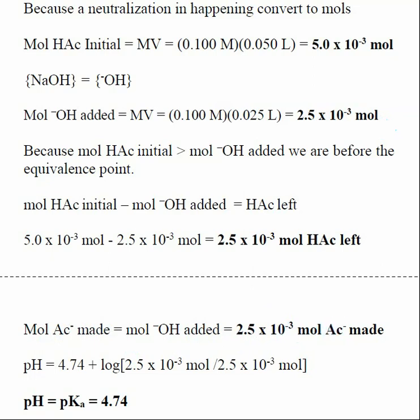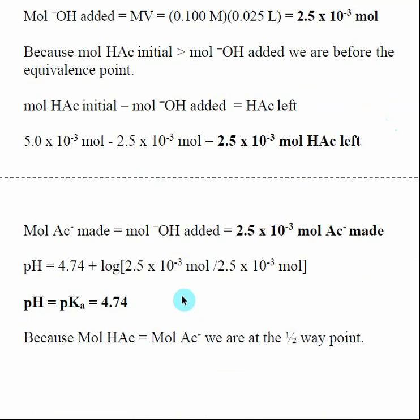Because we are using a weak acid/strong base titration and are before the equivalence point, we use the Henderson-Hasselbalch equation. Plugging in the values — conjugate base divided by acid — those two mole values are equal to each other, so the ratio is 1 and log(1) equals 0. This whole term disappears, and we get pH equals pKa.